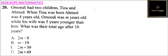Question number 20. We are told Omode had two children, Tina and Ahmed. When Tina was born, Ahmed was four years old. Omode was M years old, while his wife was five years younger than him.